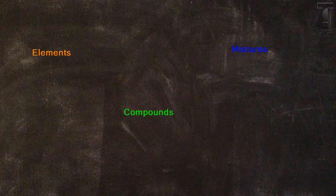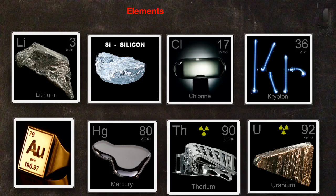Let's do a quick review of elements, compounds, and mixtures. The first type of matter we're going to review is elements. Remember, elements are pure substances, and they are made of only one type of atom. We find them on the periodic table, and there are more than 100 elements.